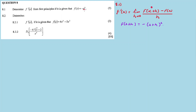So f(x+h) is equal to -(x+h)². Where there's x, you replace it with x+h. Then you simplify. So x+h, you replace x with x+h, then you multiply out.